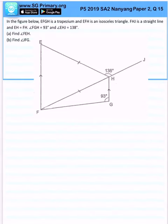So let us just make sure we get all the figures and information right. We have an isosceles triangle and we have a trapezium EFGH. We have two angles that are given: angle FGH is 93 degrees, angle EHJ is 138 degrees.